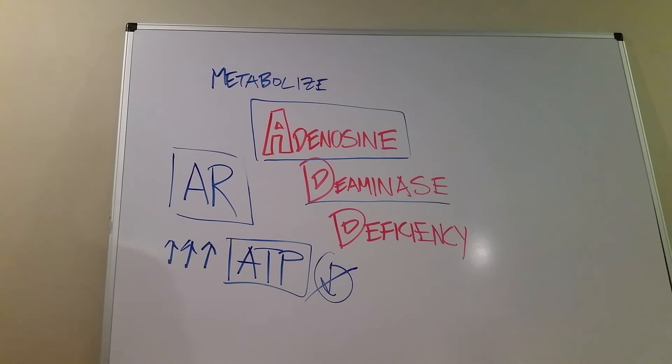So adenosine deaminase deficiency is the most common reason for SCID to show up in little people. And that's, again, because we can't metabolize adenosine. So it leads to high amounts of ATP and dATP. We can't make new lymphocytes.